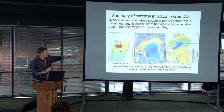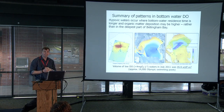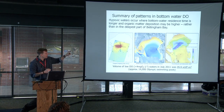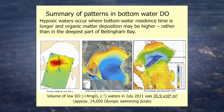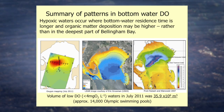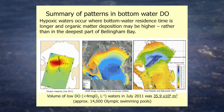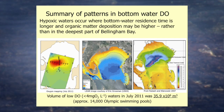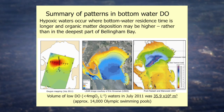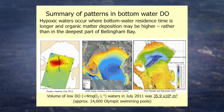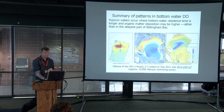The water sits, organic matter decomposes, and it draws down oxygen concentrations. Sarah did some calculations based on three-dimensional estimates and found that the volume of low dissolved oxygen water — lower than four milligrams per liter — is equivalent to about 14,000 Olympic swimming pools. So there's a large amount of low dissolved oxygen water in there.